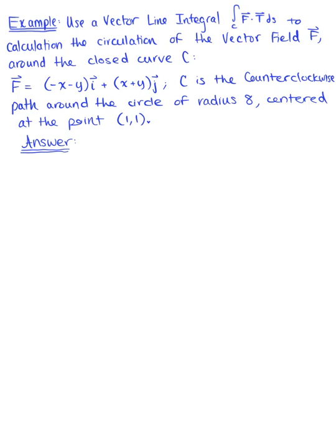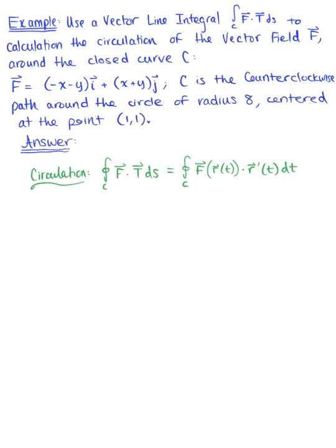We want to compute our circulation using a vector line integral. We know that is the integral over our closed curve C of the vector field F dotted with the tangent vector with respect to arc length. We can convert this to the integral over the closed curve C of the parametrized vector field dotted with the tangent vector with respect to t, dt. This is the formula we are going to use to compute the circulation.